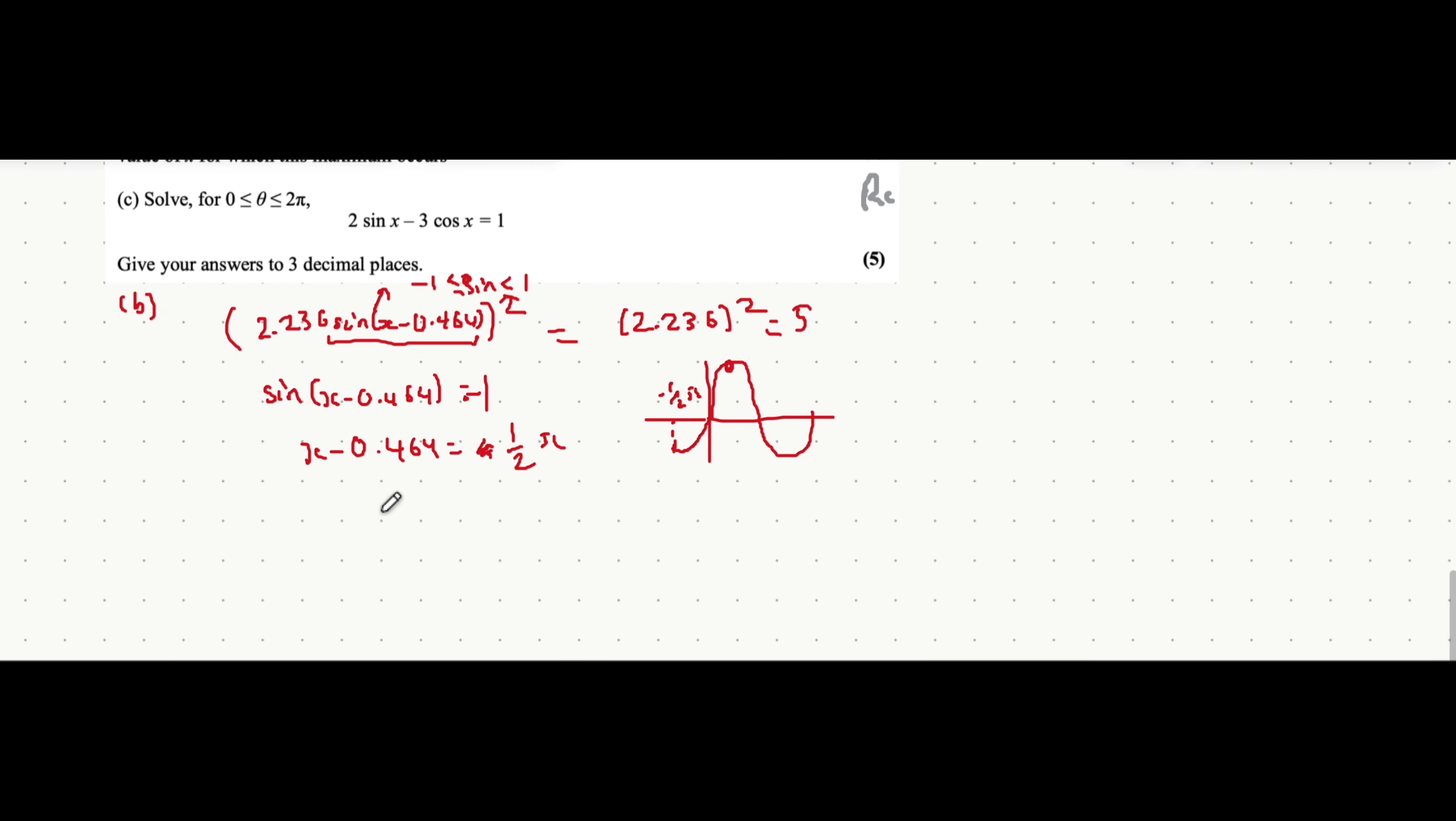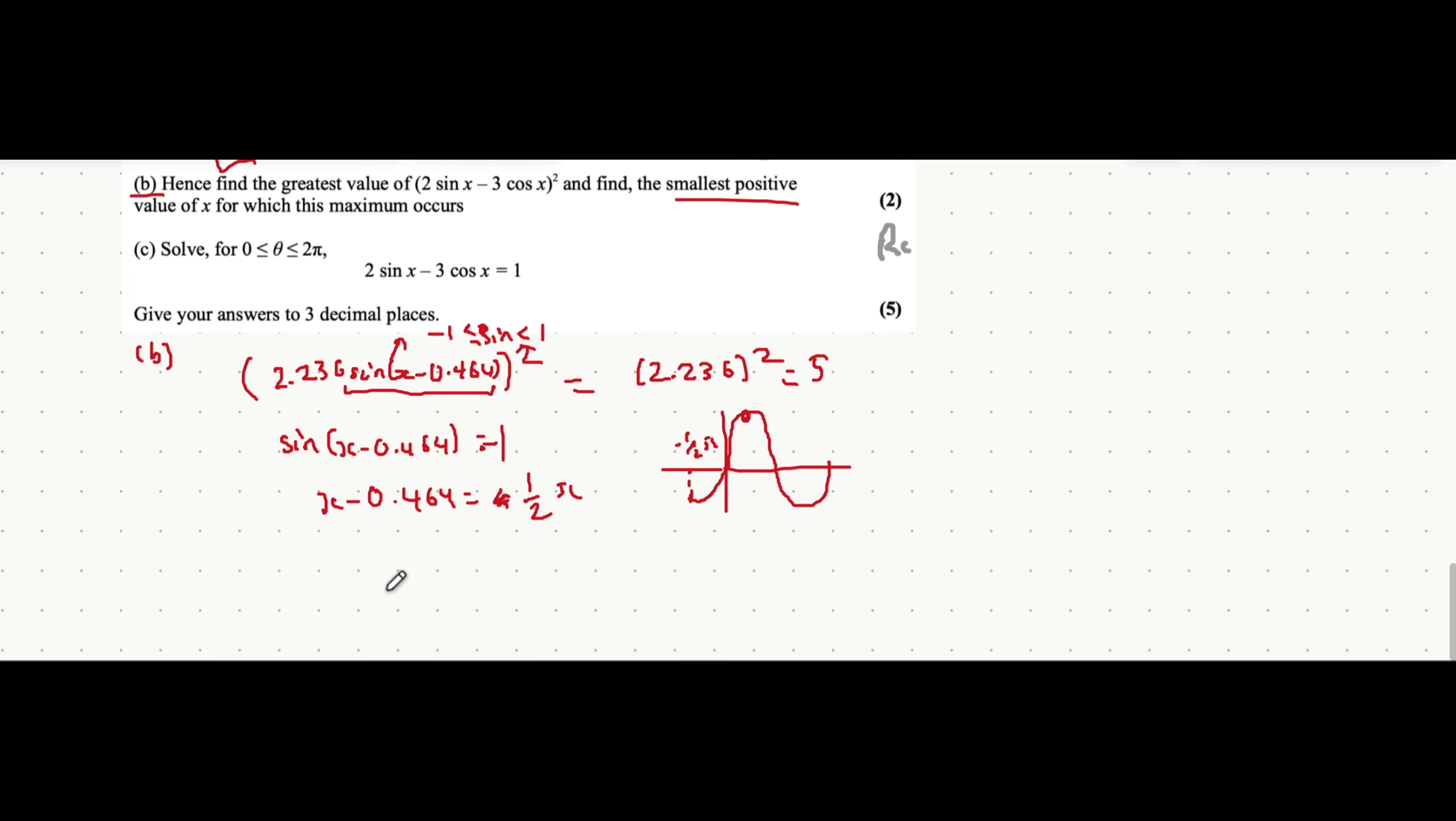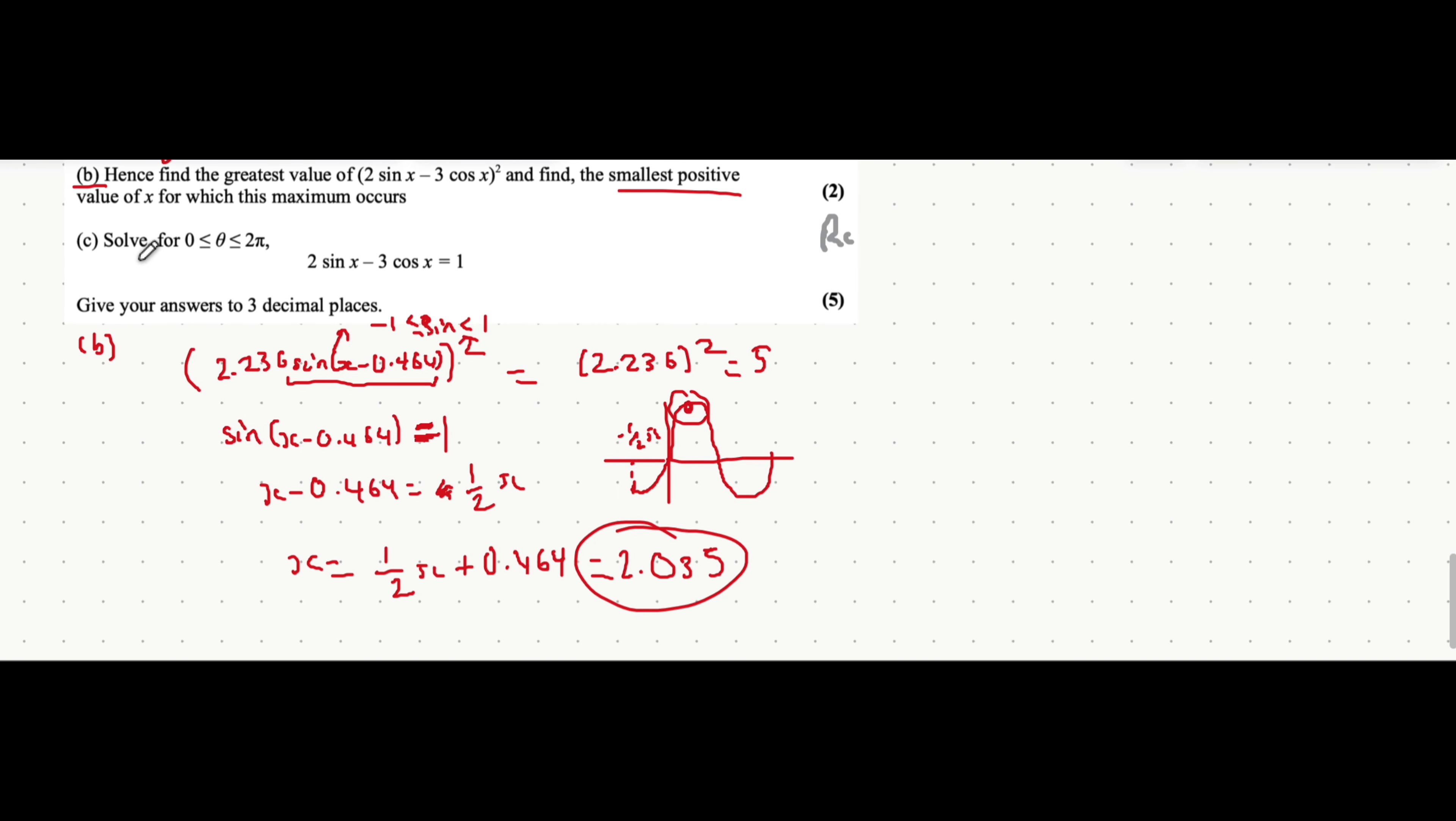And, yeah, that would be the better one to use here. Because if you used minus a half pi and then added 0.464 to it, it would be a negative number. Whereas here it's asking for the smallest positive value of x. So when you use a half pi, by doing the inverse sine of 1 from both sides. Sorry, this shouldn't be a minus 1. You'll get x equals a half pi plus 0.464. Again, you put all of that into your calculator. And plus 0.464 is equal to 2.035. And that's it. That's the value of x at which the maximum occurs.